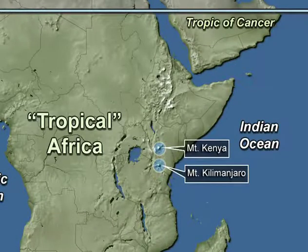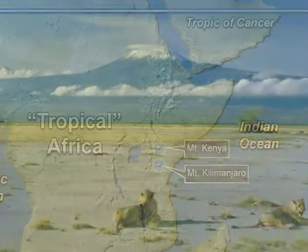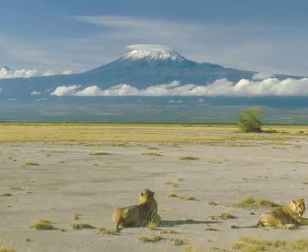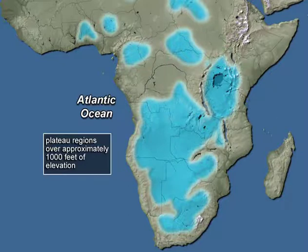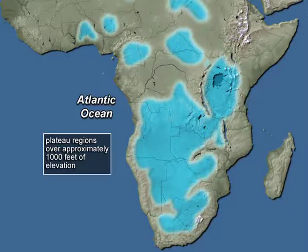Only three degrees south of the equator lies the nearby peak Kilimanjaro — Africa's highest mountain — also with permanent ice and snow. Even aside from these great mountains, if we're on Africa's high plateaus, they are far cooler than one might think from the mere latitude of being in the tropics.